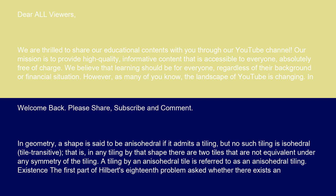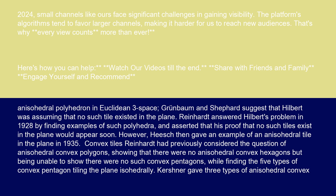The first part of Hilbert's 18th problem asked whether there exists an anisohedral polyhedron in Euclidean 3-space. Grunbaum and Shepard suggest that Hilbert was assuming that no such tile existed in the plane. Reinhardt answered Hilbert's problem in 1928 by finding examples of such polyhedra, and asserted that his proof that no such tiles exist in the plane would appear soon. However, Heesch then gave an example of an anisohedral tile in the plane in 1935.